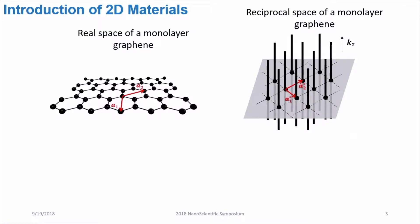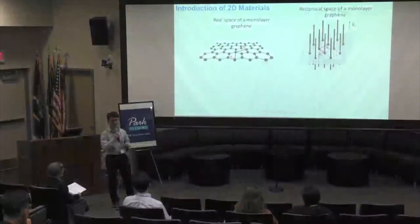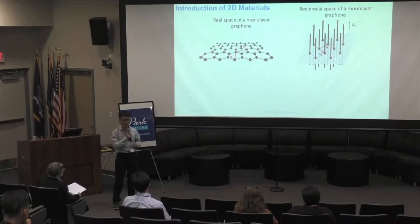For the reciprocal space of graphene, it consists of a network of reciprocal rods that sit on a hexagonal lattice.